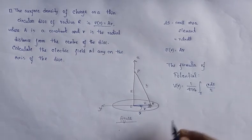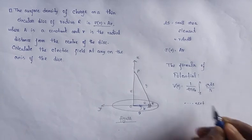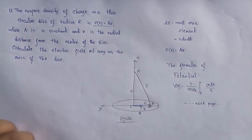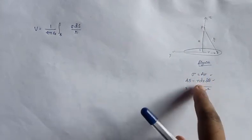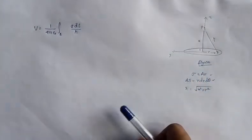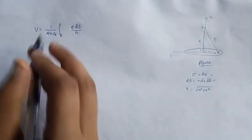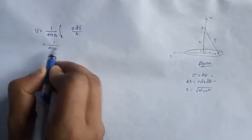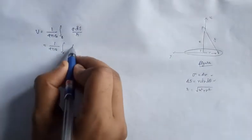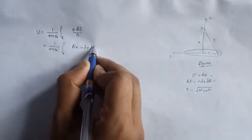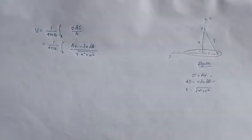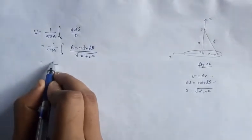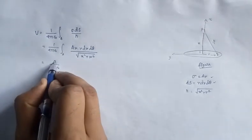Now let us go to the next page. I have drawn the figure and the major quantities to substitute. On the left-hand side equation we substitute them one by one: one over four pi epsilon-naught, surface integral of sigma equals A·r, times the area element dS, divided by small r. So we write it down like this.